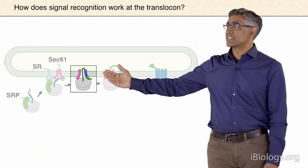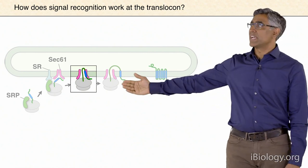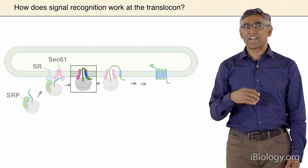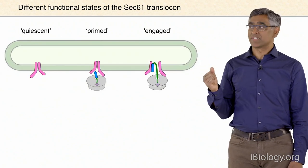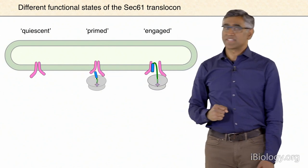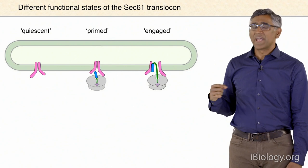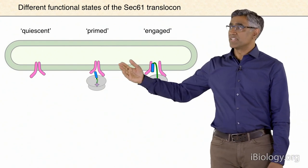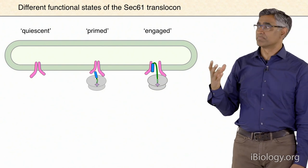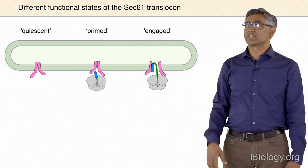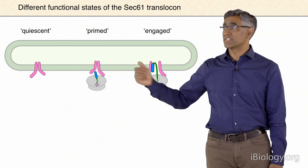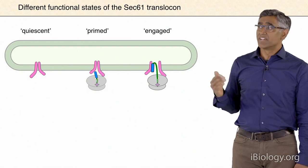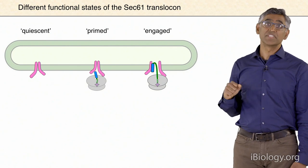The next step, after you get to the ER, is you need to find that translocation channel and have the signal—if it's a real bona fide signal—open that translocation channel. Looking at the steps needed to open the channel: when nothing is happening, SEC61 would be in its quiescent state. It's long been speculated, based on biochemical data, that when the ribosome first arrives and binds, there's some type of priming reaction. That priming reaction can be detected as a subtle conformational change in SEC61, and is thought to somehow prepare it to be engaged by the signal peptide.